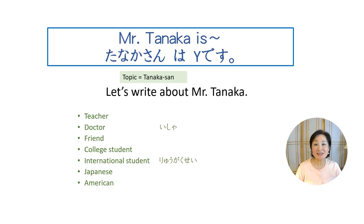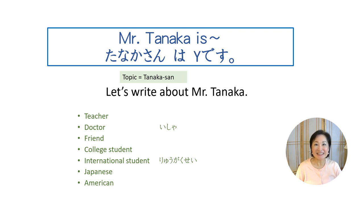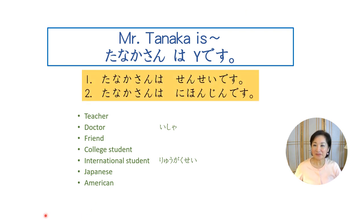Let's change the topic to Tanaka-san. Please write two sentences: number one, Tanaka-san is a teacher; number two, Tanaka-san is Japanese. You may pause this video if you need more time. どうですか？書けましたか？ Here are the answers: Tanaka-san は 先生 です。 Tanaka-san は 日本人 です。